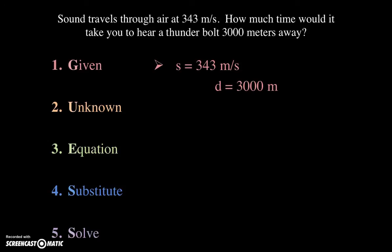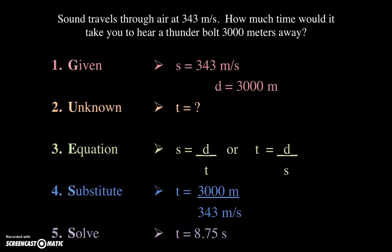What is unknown? The second sentence says how much time. So T, time, is our unknown. Thirdly, the equation that's going to relate all of these givens and unknowns together is the speed equation. Speed is distance divided by time, and we can flip that around to solve for time. Time is distance divided by speed. Substituting our givens into our equation, the time is 3,000 meters divided by 343 meters per second, which comes out to 8.75 seconds.